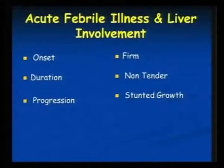Hepatomegaly can be localized or diffuse. If you have a localized disease, you have localized enlargement with lobar involvement; diffuse involvement suggests a generalized systemic or primary liver pathology. Always keep in mind when seeing a patient: three things — onset, duration, and progression. If you find these three, you can reach an almost clinical diagnosis, not the etiological diagnosis, but at least an anatomical diagnosis.